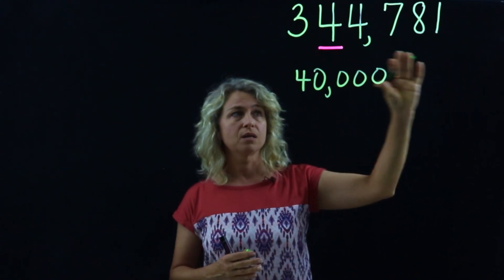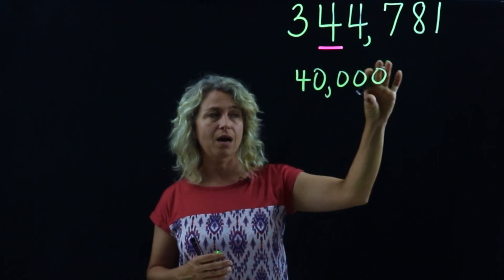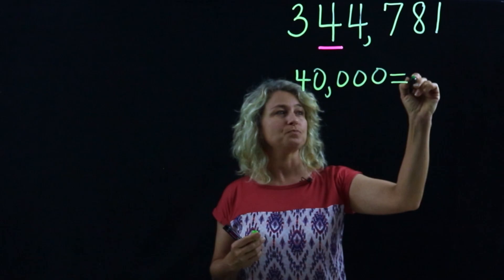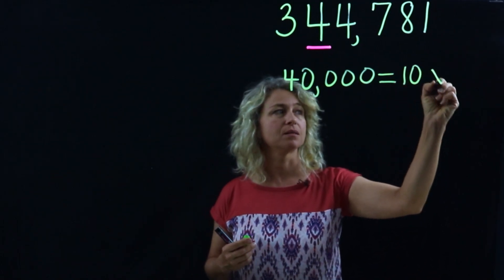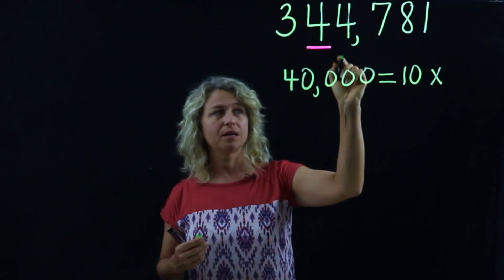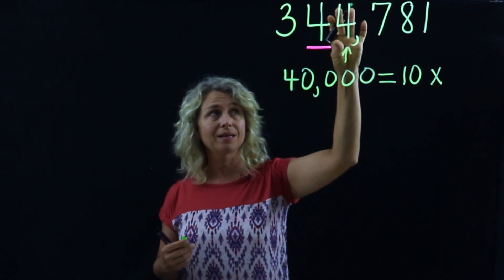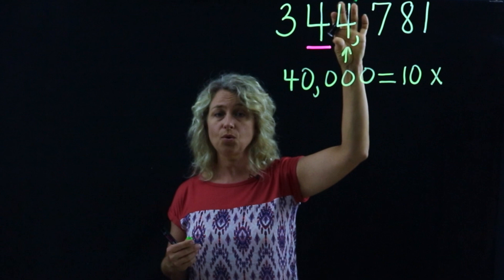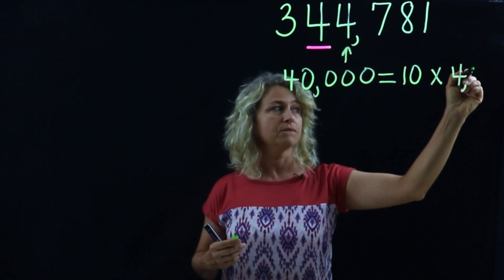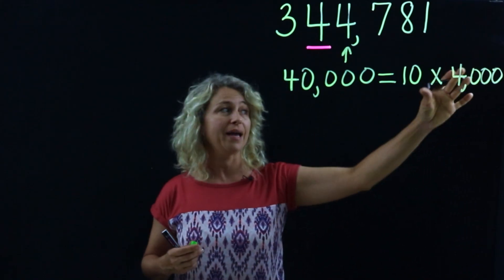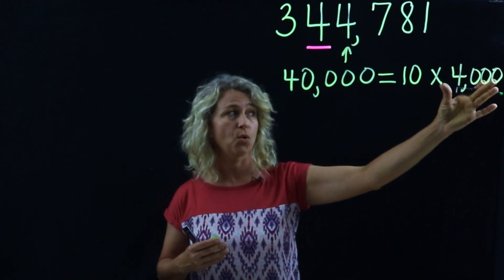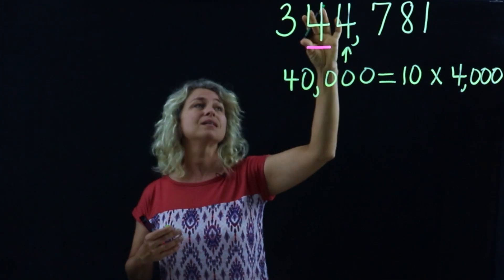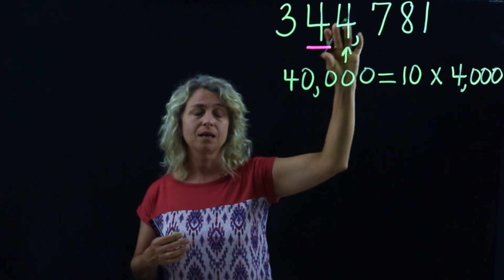Let's show this in an expression. We know that this is forty thousand. Forty thousand equals — or you could say 'is' — ten times the digit to its right. Now let's look at that digit. The digit to the right is in the thousands place, so therefore this four is worth four thousand. And when you multiply: four thousand times ten, you get forty thousand. So this four is ten times the digit to its right.